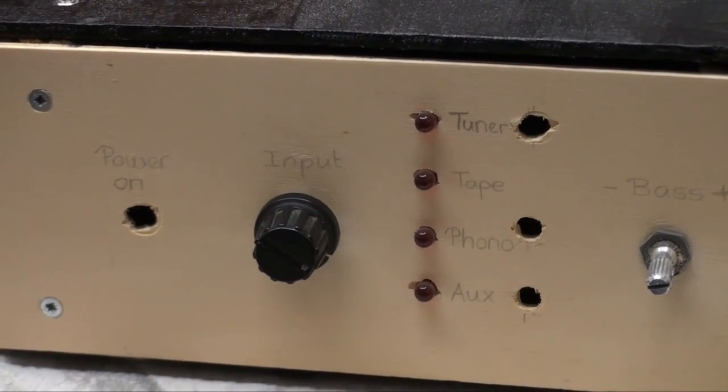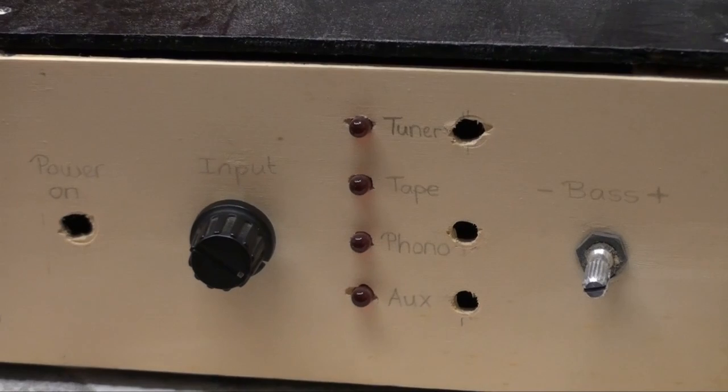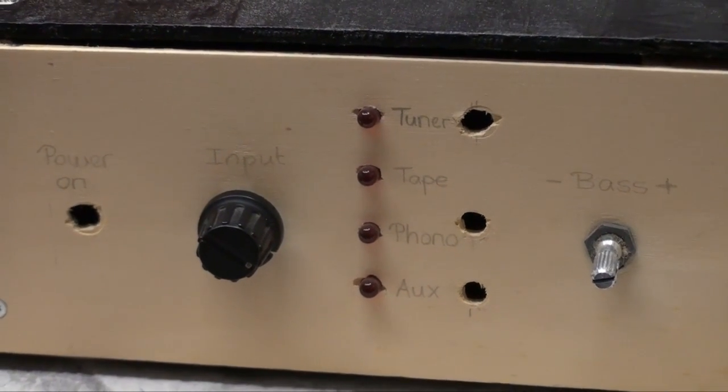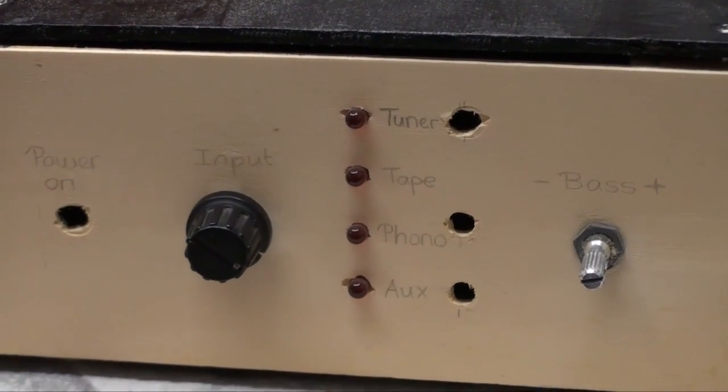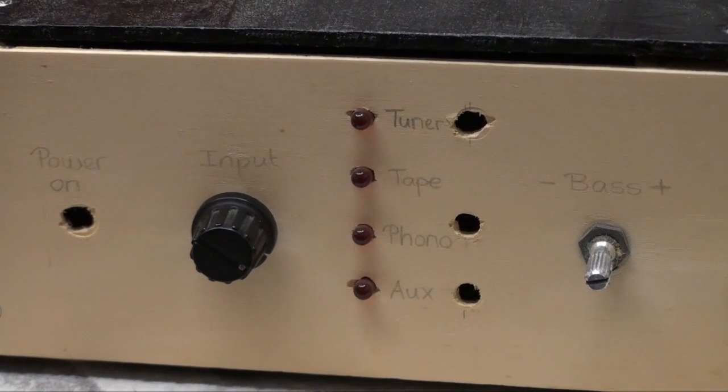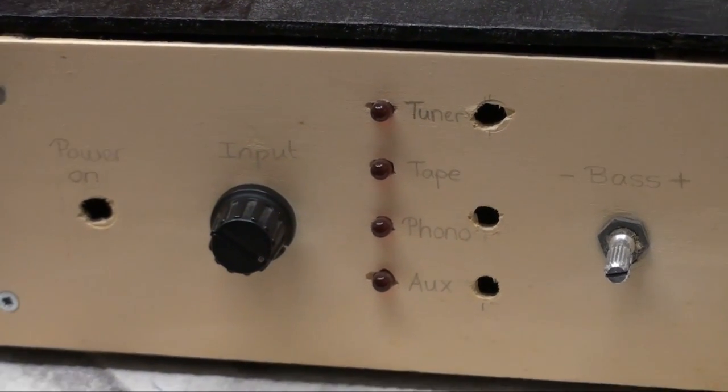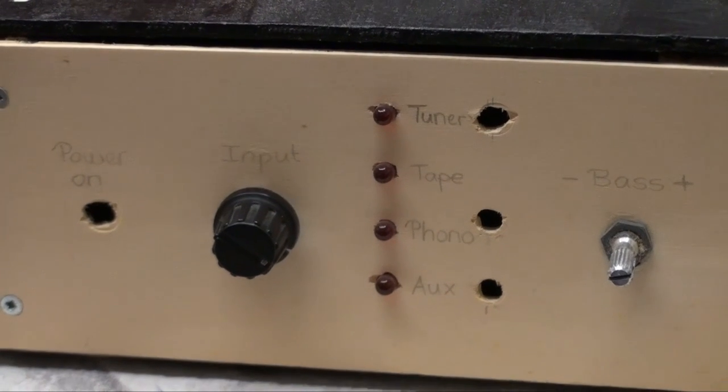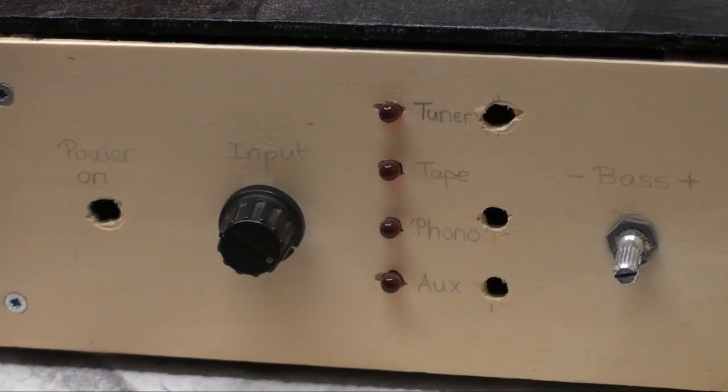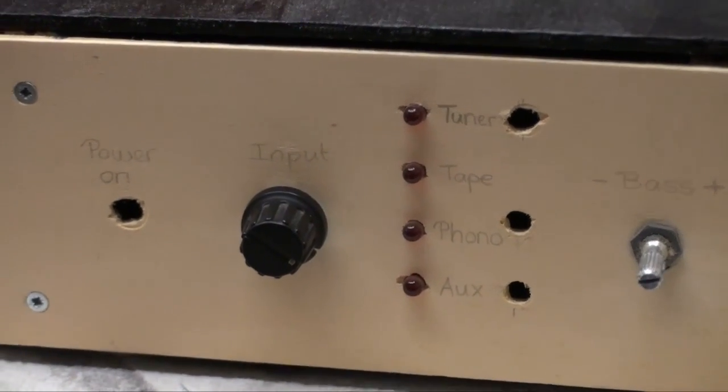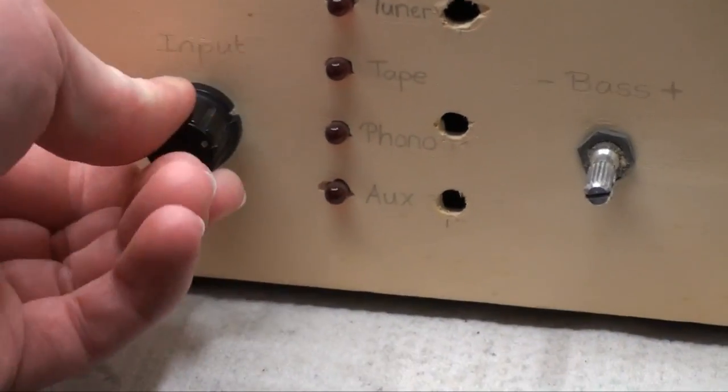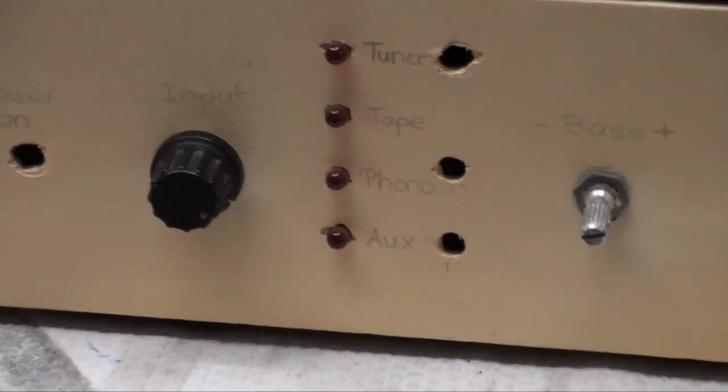Here we have the input selector, and that is connected to these four LEDs. We have four inputs for tuner, tape, phono, and auxiliary, and the phono is, in fact, a phono input. There is a little pre-amplifier in this. We have a little four-position rotary switch on there.